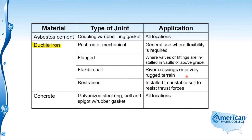Finally for ductile iron, we have the restrained joint, which is installed in unstable soil to resist thrust forces. So a restrained joint is used either in unstable soil or where a thrust force is going to be applied at that joint.